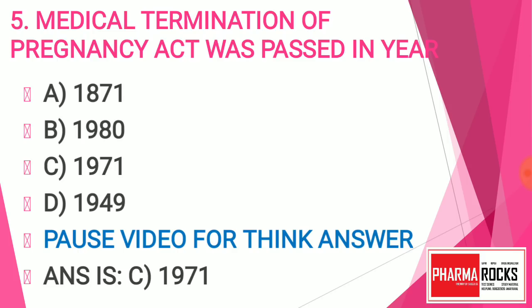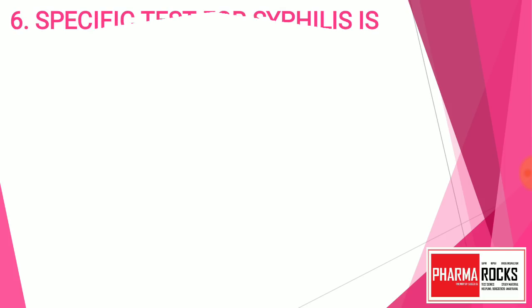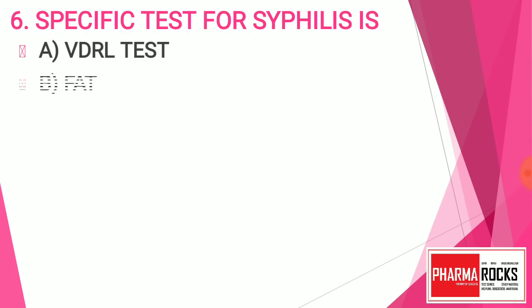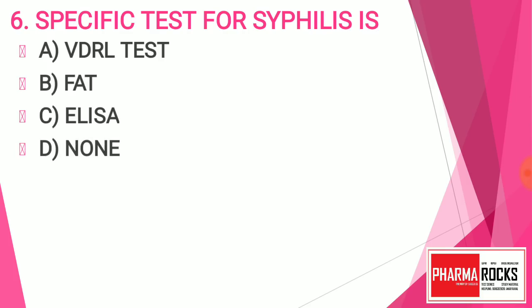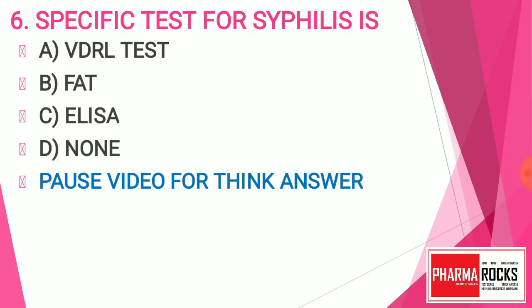Question number six: The specific test for syphilis is — we have to find out the specific test for syphilis. Option A: VDRL test, Option B: FTA test, Option C: ELISA, Option D: None of the above. Pause the video to think about the right answer. Find out the specific test for syphilis — syphilis is a sexually transmitted disease, so which test is used for its identification?